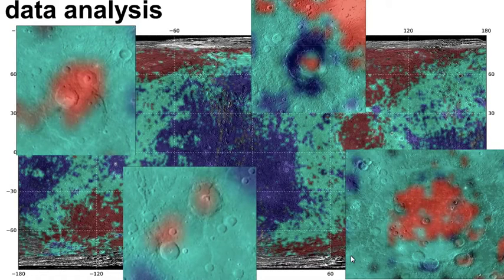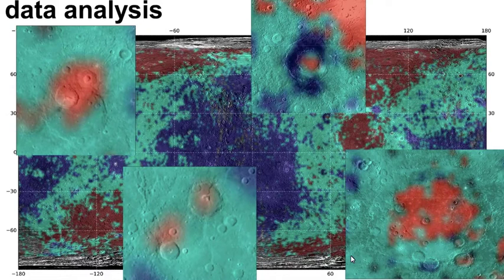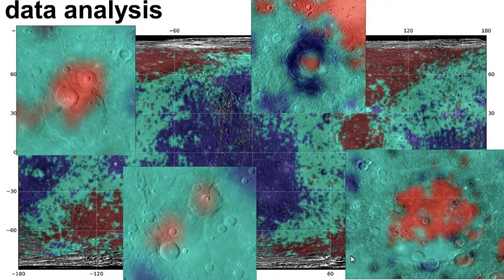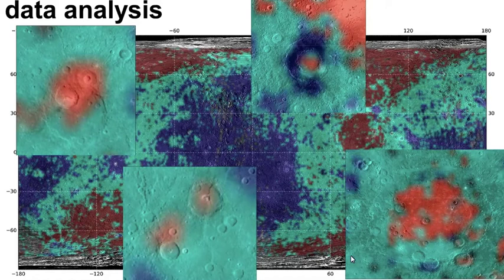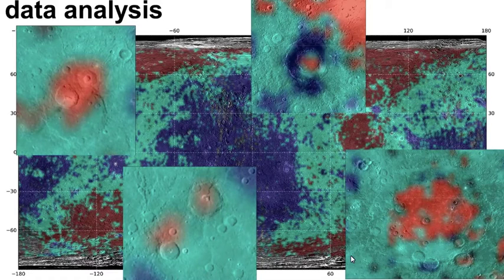If you zoom in, even though the resolution is only one-per-one degree, there are some structures that are really resolved in our map. You can see the ring around a big crater. In the small rectangles, there are some red pixels classified as the red region, showing hollows — which are peculiar structures on Mercury.